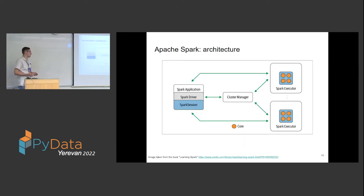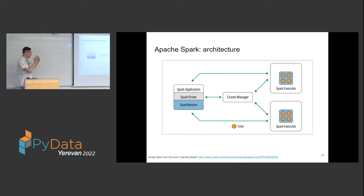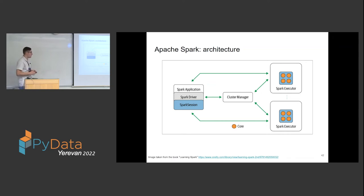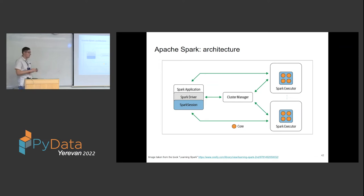A little about its architecture: it's a pretty common one-driver, multiple-executors architecture. Your code would usually be in the driver process — in the case of PySpark and Python, that's the code you're actually writing and debugging. Whenever you do the actual processing of the data, which happens in multiple executors on multiple machines, the work is distributed to those machines by the driver using the resource manager, which would usually be something like YARN or Kubernetes.